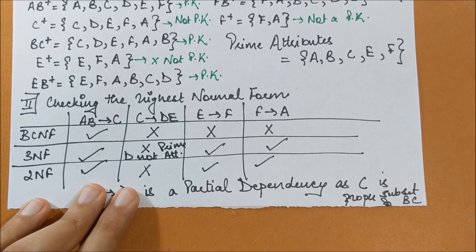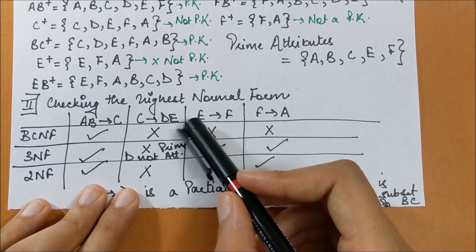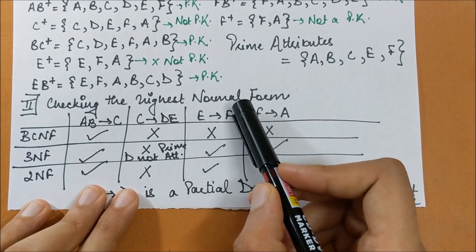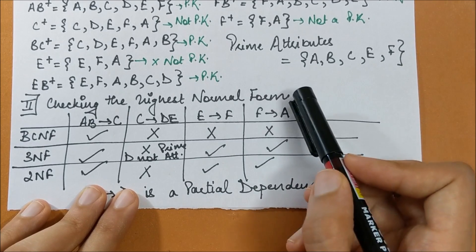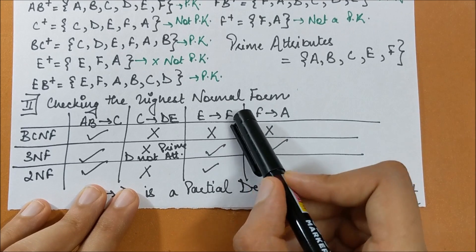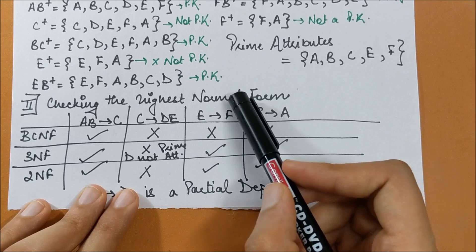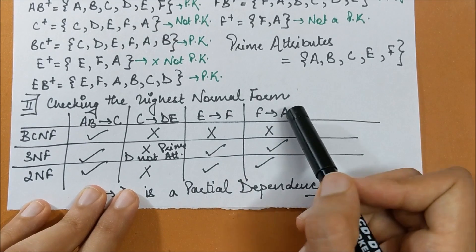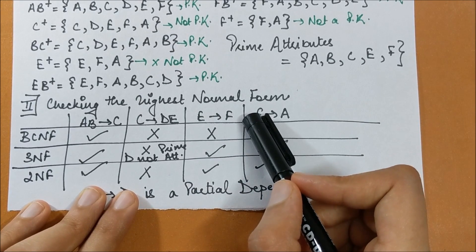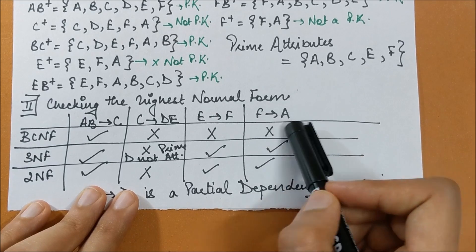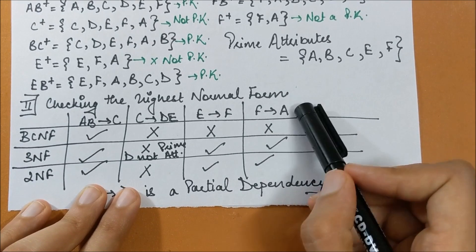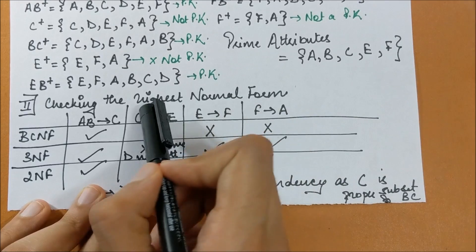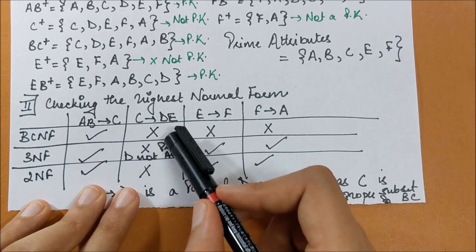For E → F: E is not a candidate key, so this is not in BCNF. However, F is a prime attribute, so this satisfies 3NF. Similarly, for F → A: F is not a primary key, but A is a prime attribute, so this is also in 3NF. Since it satisfies 3NF, it also satisfies 2NF — I tick-mark both.